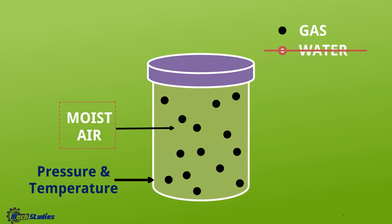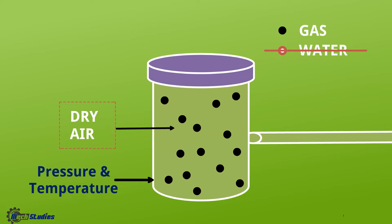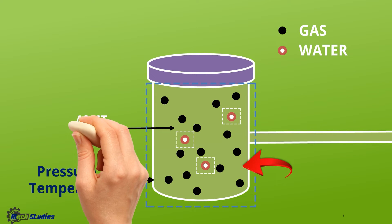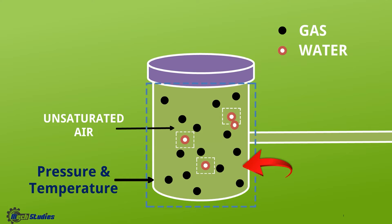Now if we remove this water vapor from the moist air, the moist air will become dry air. If we connect a pipe and add some water vapor, the dry air will again become moist air. Observing closely, we see there are still spaces available to accommodate extra water vapor — it means the air can hold more water vapor, and this air is called unsaturated air.